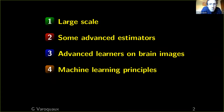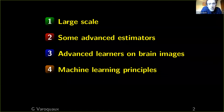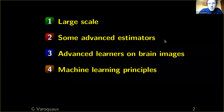Then I'll move to more advanced estimators. I won't talk really about deep learning because, for several reasons, on many of the problems we have in neuroimaging, it's not useful — and maybe I'll mention why I think it's counterproductive. Finally, I'll talk about some advanced learners we've developed for brain images, to give you ideas on how we've combined these notions. And last but not least, I'll dwell a bit on principles of machine learning and the theoretical framing behind all this.